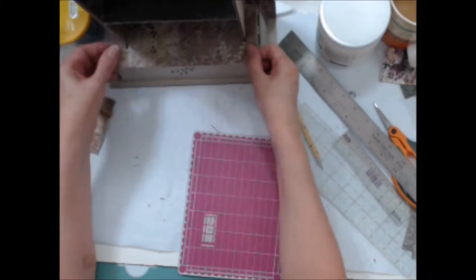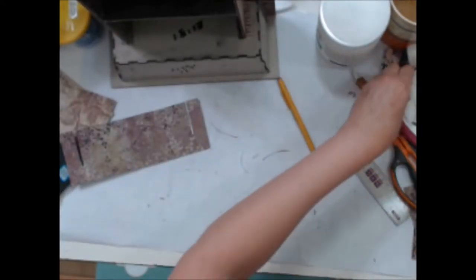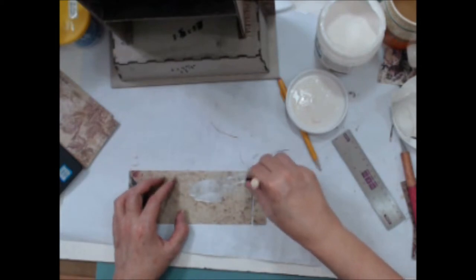Always dry fit the paper before gluing it down. Once I was happy with my cuts, I used my PVA glue to adhere it and burnished the paper well with a bone folder.